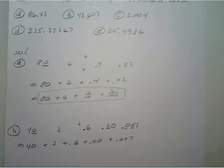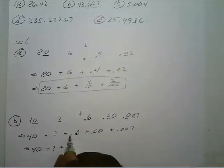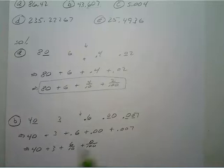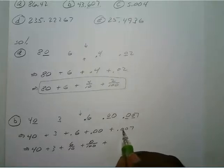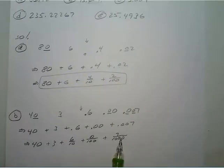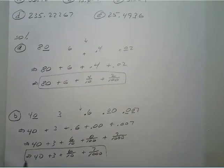Now convert all of those to fractional form. That gives us 40 plus 3 plus 6 tenths — just one decimal place, so six tenths — plus zero over one hundred if you want to include it, though it's really unnecessary since it's just holding a place value — plus seven over one thousand, because it's tenths, hundredths, thousandths. The zero term is dismissed, so the actual answer is 40 plus 3 plus 6 tenths plus 7 over one thousand.